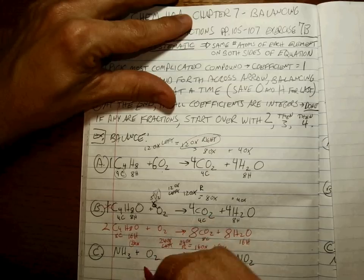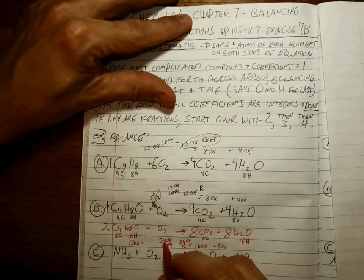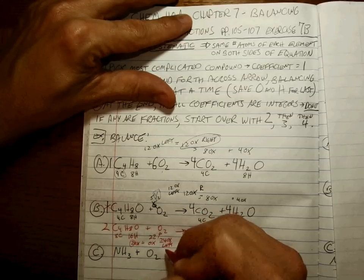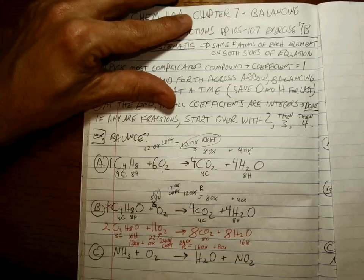24 oxygens on the left. Since I have 2 oxygens here, 2 oxygens, and I need 24, that means 22 oxygens have to come from here and that coefficient would be an 11.